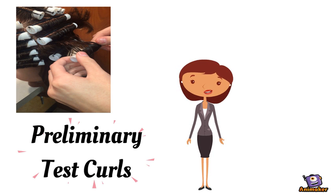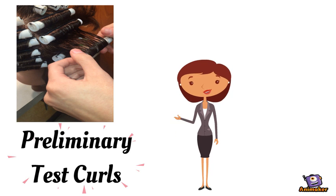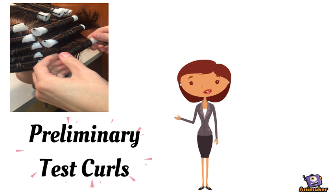Checking the curls also gives you an idea of how fast the hair is processing the perm solution. If solution is left on for too long you may be left with breakage or frizzy and dry hair.